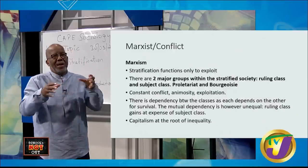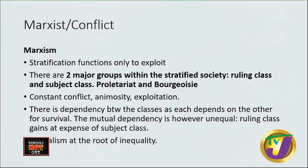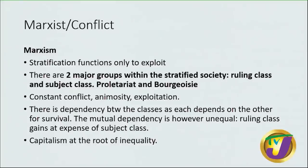For the Marxists, we must think of Marxism within the context of the period in which Karl Marx lived, 1818 to 1883. During that period, society was divided into just two groups: the haves and the have-nots. There are two major groups within the stratified system — the ruling class and the subject class: the bourgeoisie, the upper class, and the proletariat, the lower class. There is constant conflict, animosity, and exploitation. There is a dependency between the classes as each depends on the other for survival.